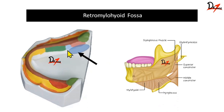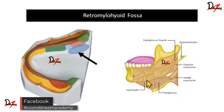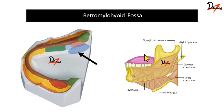The middle part — from the pre-mylohyoid fossa till the distal end of the mylohyoid ridge — is shallower than the other parts of the sulcus. This is due to the prominence of the mylohyoid ridge and the mylohyoid muscle. When movements take place, the mylohyoid muscle moves up and down, and because of that the middle portion of the sulcus is shallower.